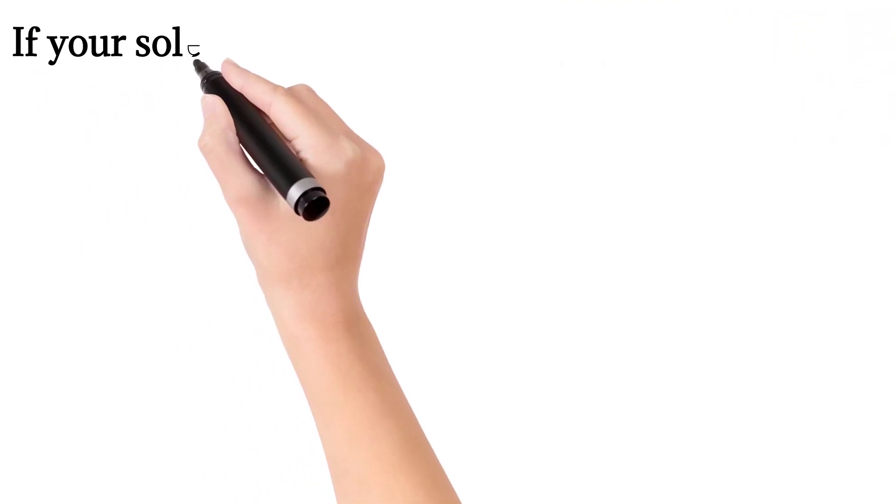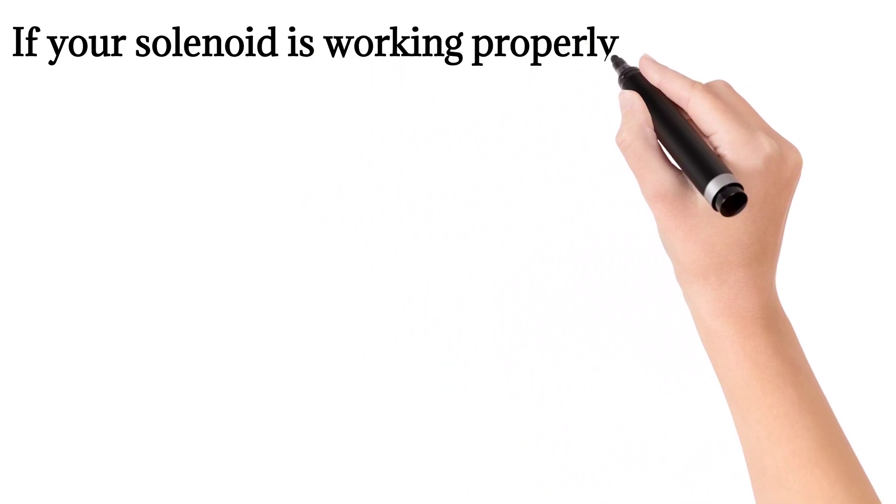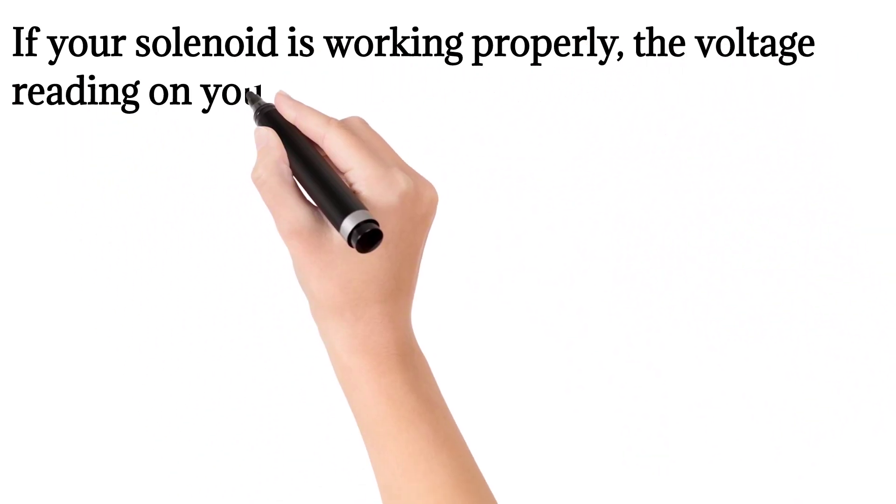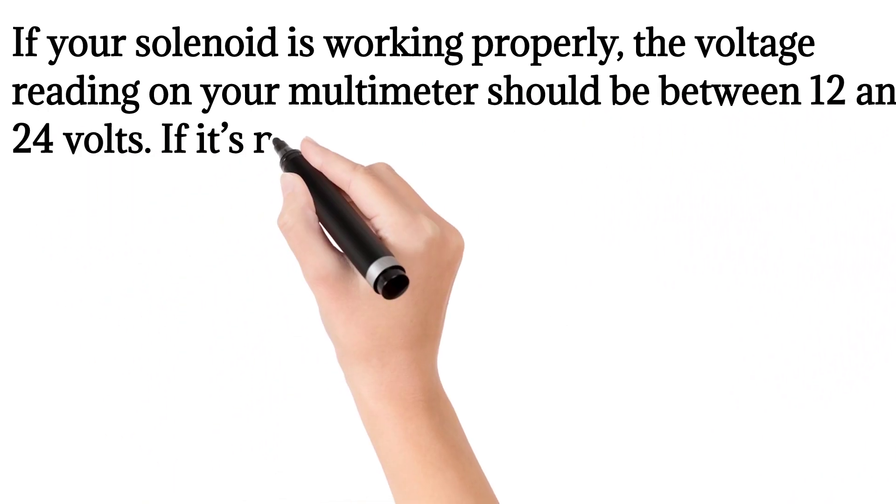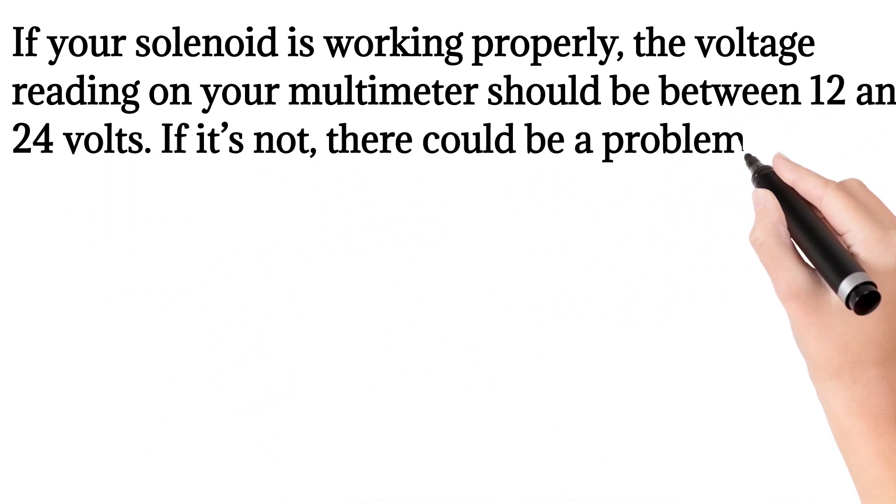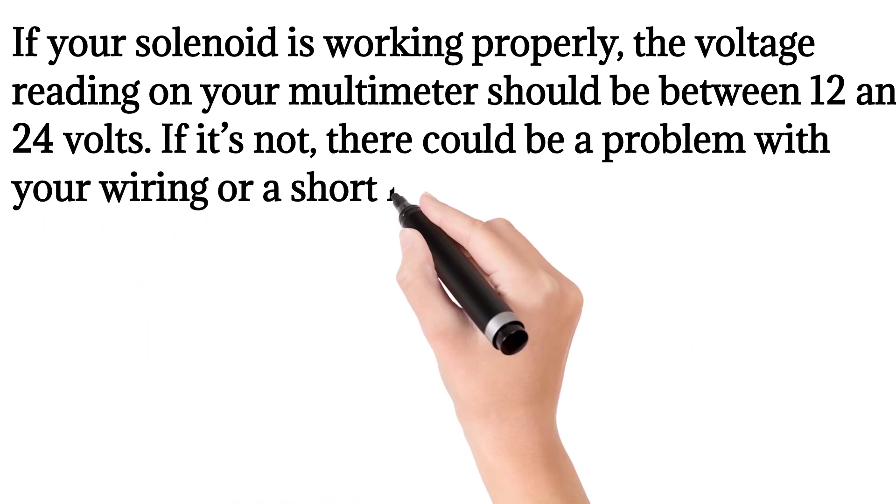If your solenoid is working properly, the voltage reading on your multimeter should be between 12 and 24 volts. If it's not, there could be a problem with your wiring or a short in your circuit.